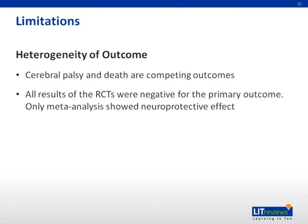The use of a composite outcome of death or cerebral palsy in these studies may be due to logistic reasons such as sample size and feasibility issues. However, death and cerebral palsy are competing outcomes — if the infant dies, he or she cannot be evaluated for a diagnosis of CP. The results from all the RCTs were negative for the primary outcome. Only the meta-analysis of neuroprotective trials demonstrated a reduction in the composite outcome with magnesium sulfate.